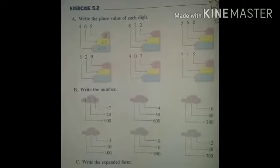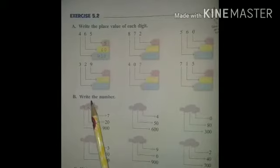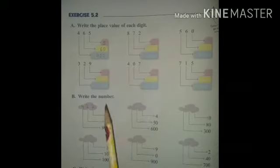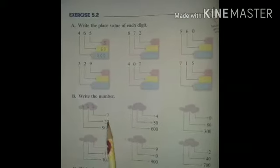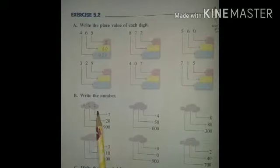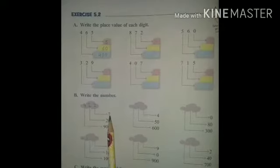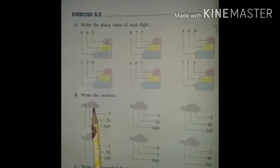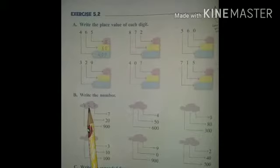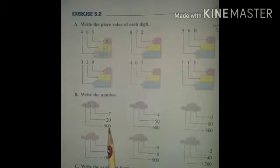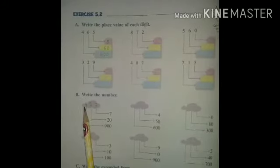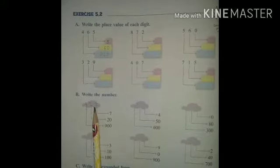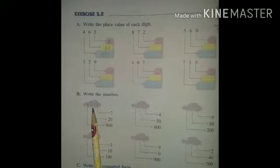Write the place value of each digit. Here we have the number 927. Seven is in the ones place, so the place value is 7. Two is in the tens place, so the place value is twenty. Nine is in the hundreds place, so the place value is nine hundred.